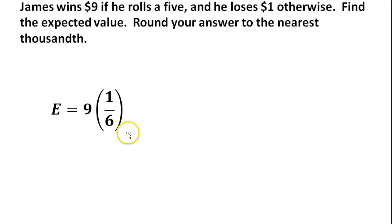So now we're going to multiply that. 9 times 1 sixth will give you part of the expected value, because $9 is what he'll receive if he rolls 1 out of the 6 different numbers on a die.